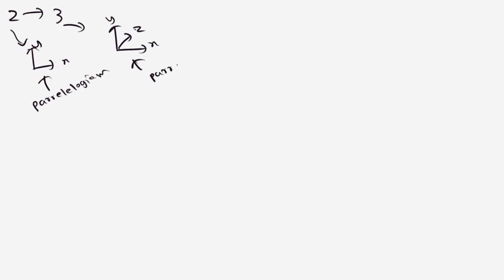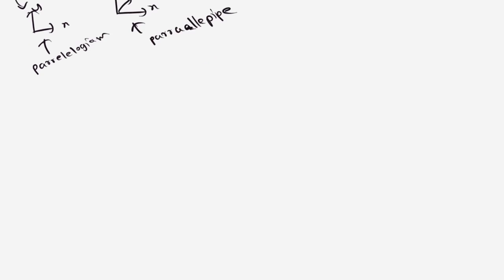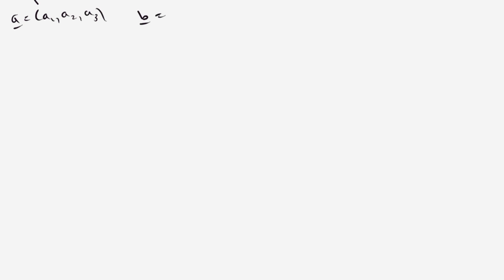Let us suppose we have some vector a = (a1, a2, a3) and vector b = (b1, b2, b3) as well as some vector c = (c1, c2, c3).